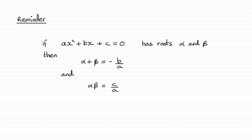Hi. Now if you were watching an earlier video in this series on roots of a quadratic equation, I showed you that if we had a quadratic equation of the form ax squared plus bx plus c equaling 0, and it had roots alpha and beta, then the sum of the roots, alpha plus beta, turned out to be equal to minus b over a. And the product of the roots, alpha beta, turned out to be equal to c divided by a.